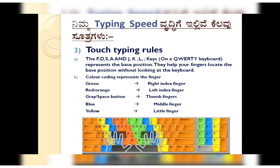The base position keys are F, D, S, A, J, K, L. This is the base position. This is the color coding representation: the green finger indicates the right index finger, the red and orange are the left index finger, the gray is the thumb finger for the space button, and the blue and yellow are the middle fingers.